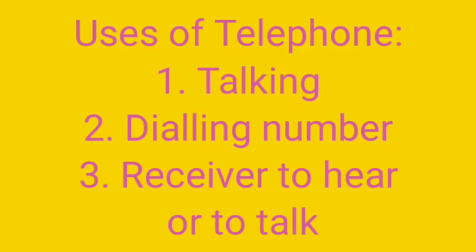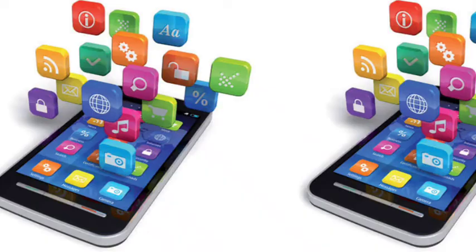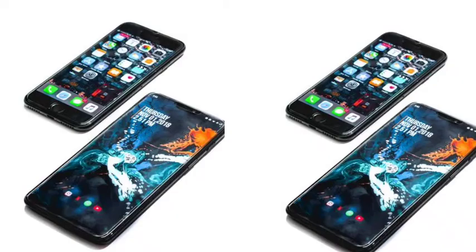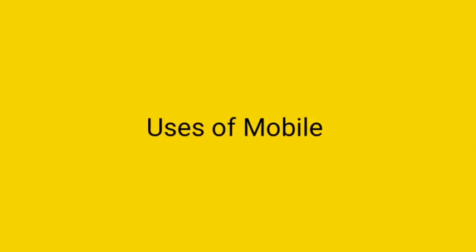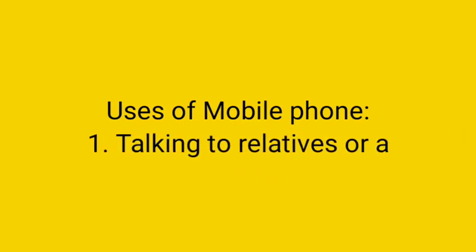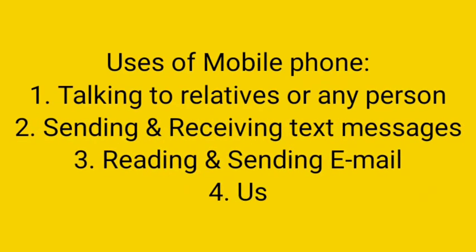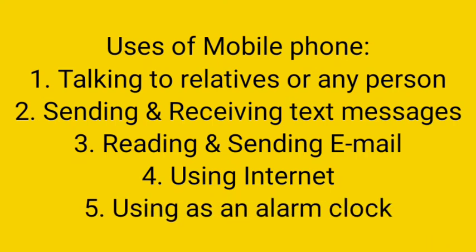Now we are going to know some uses of mobile phones. You are all aware about mobile phones, so think of some uses and match your thinking with these. Number 1, mobile phone is used for talking to our friends, relatives, or any person. Number 2, mobile phone is used for sending and receiving text messages. Number 3, mobile phone is used for reading and sending email.